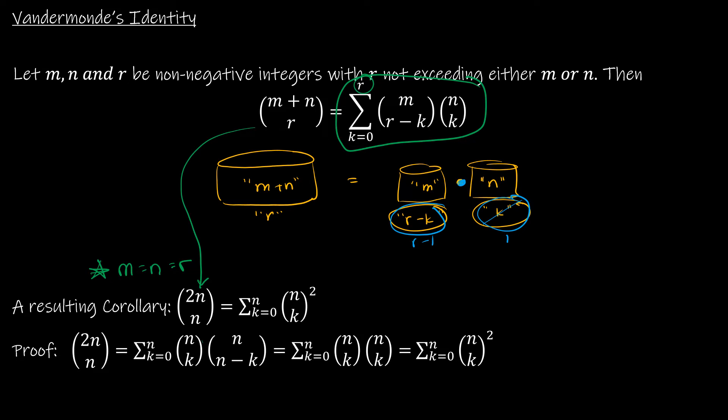And then n choose k and n choose n minus k. So I've sort of switched the order around, and I apologize for that, but it's the same. Now, that's using Vandermonde's identity.